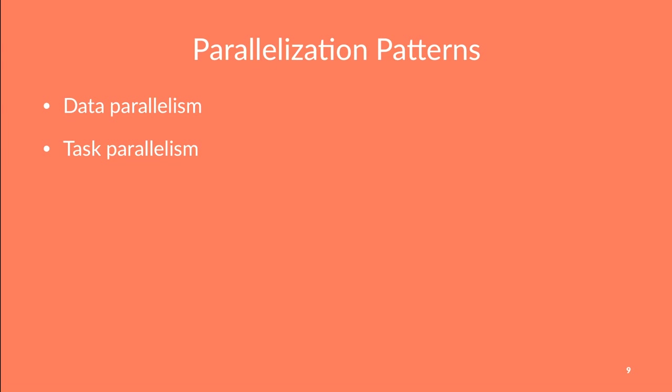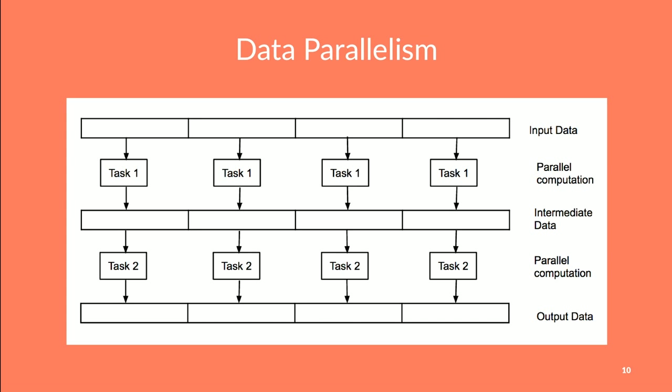Before getting into how those tools work, let's briefly look at what parallelization patterns exist. There are two kinds: data parallelism and task parallelism. In data parallelism, you take your input data, slice it into multiple chunks, run the same task concurrently on multiple nodes in a distributed way, and then combine the results. A classic example is the GPU — it runs the same instruction across hundreds or thousands of cores, each getting different data. That's a single instruction, multiple data pattern. Libraries like OpenMP and MPI follow the same idea.